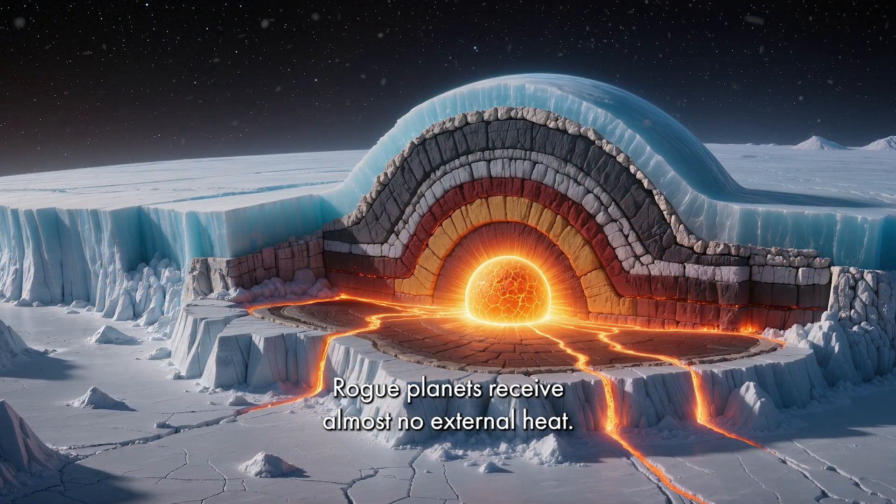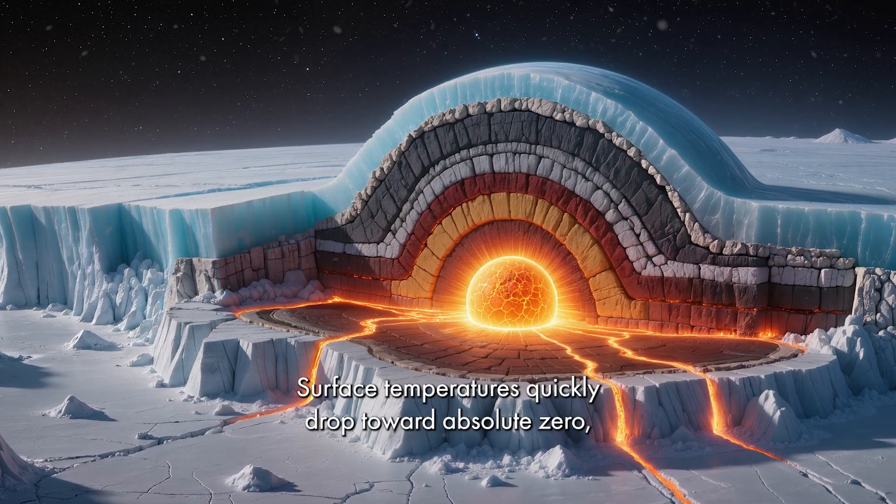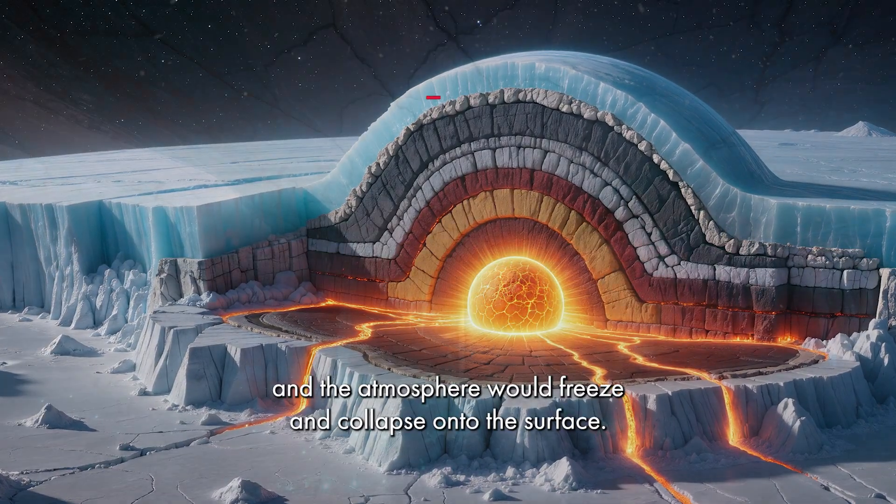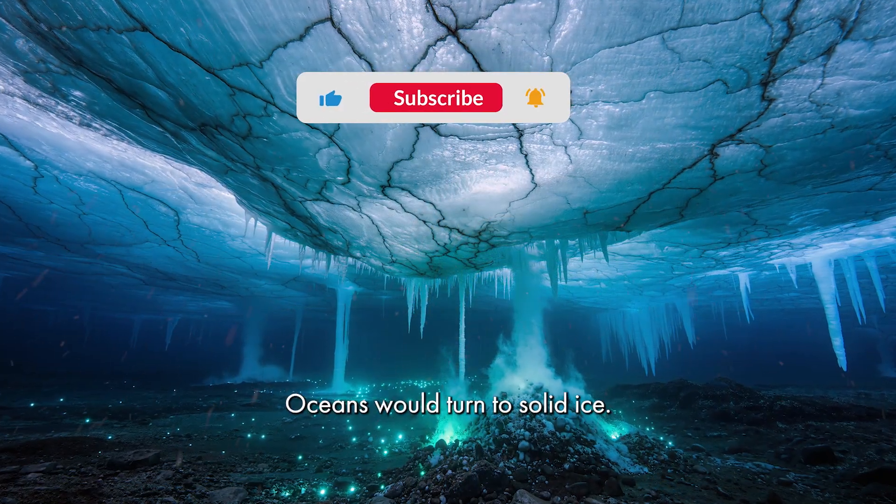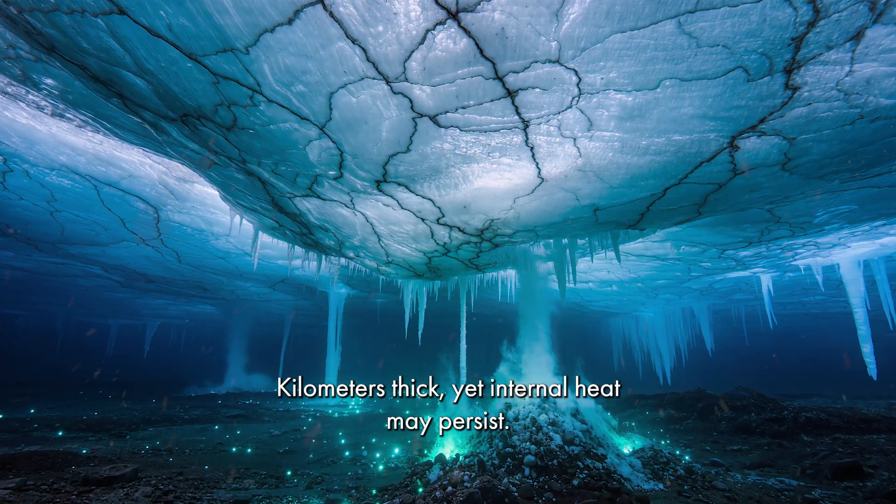Without a star, rogue planets receive almost no external heat. Surface temperatures quickly drop toward absolute zero. Any atmosphere would freeze and collapse onto the surface. Oceans would turn to solid ice, kilometers thick. Yet, internal heat may persist.